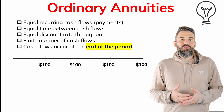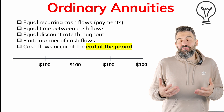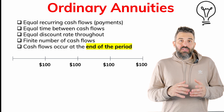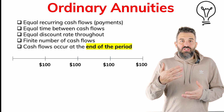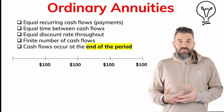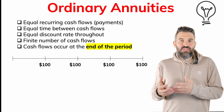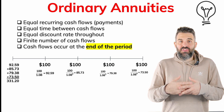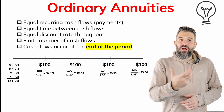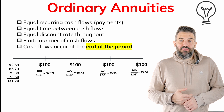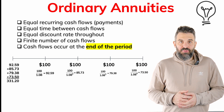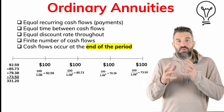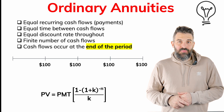We already know how to find the present value of a lump sum. Technically, an annuity is just a string of cash flows, so you could discount each one individually and add them up — finding the PV of the first, second, third, and fourth payment. But you can imagine that for a 50-year or 200-period annuity, that would take a while. Instead, we can use the ordinary annuity present value formula.